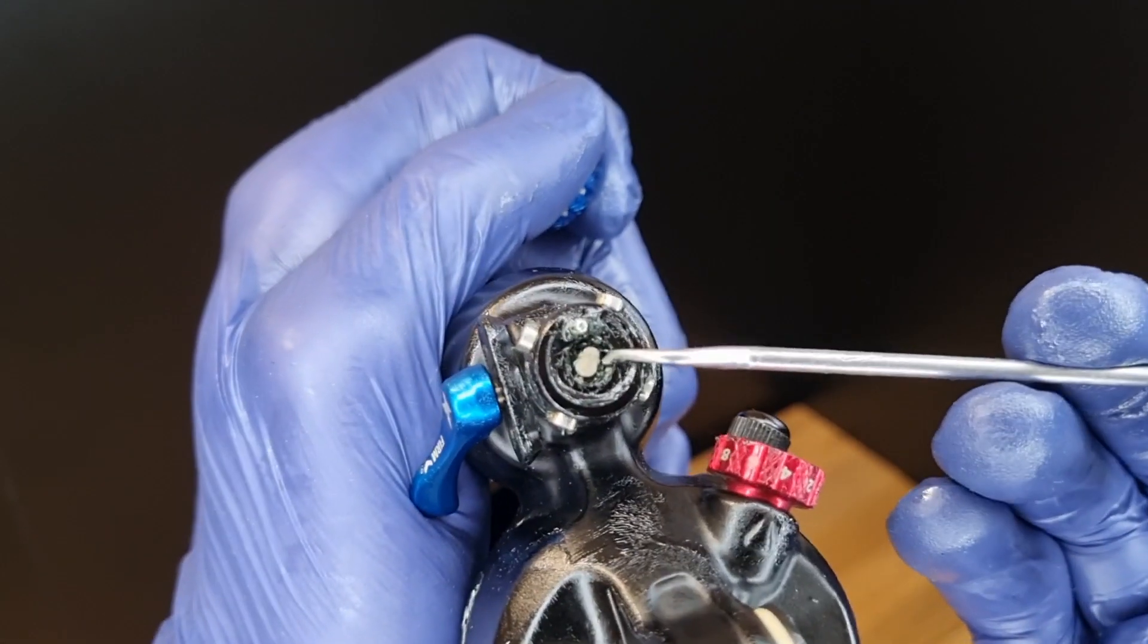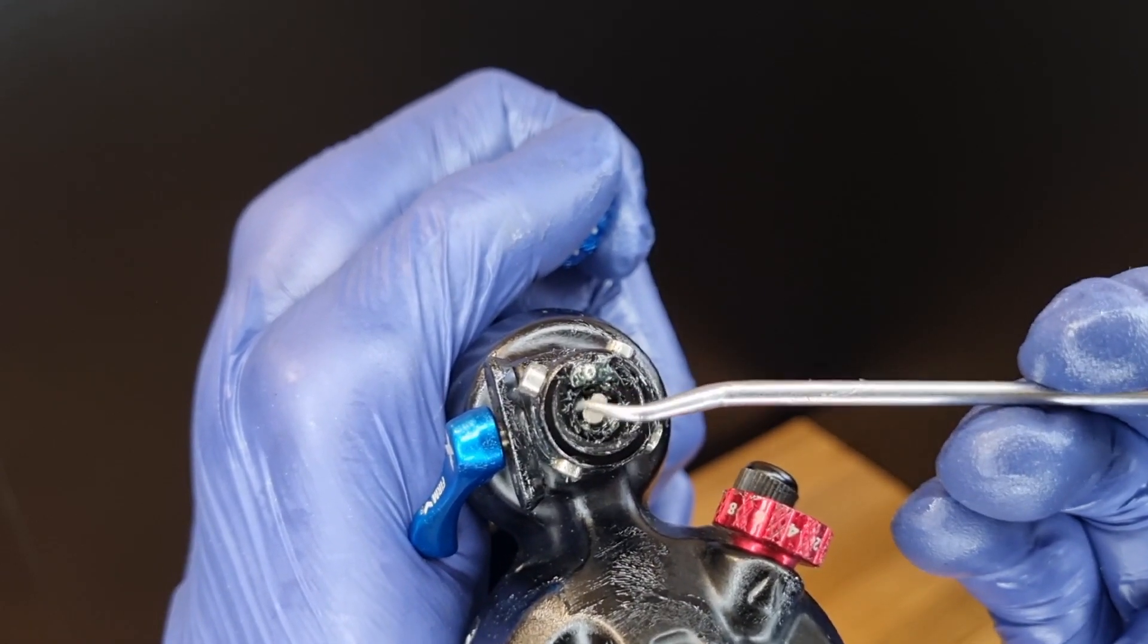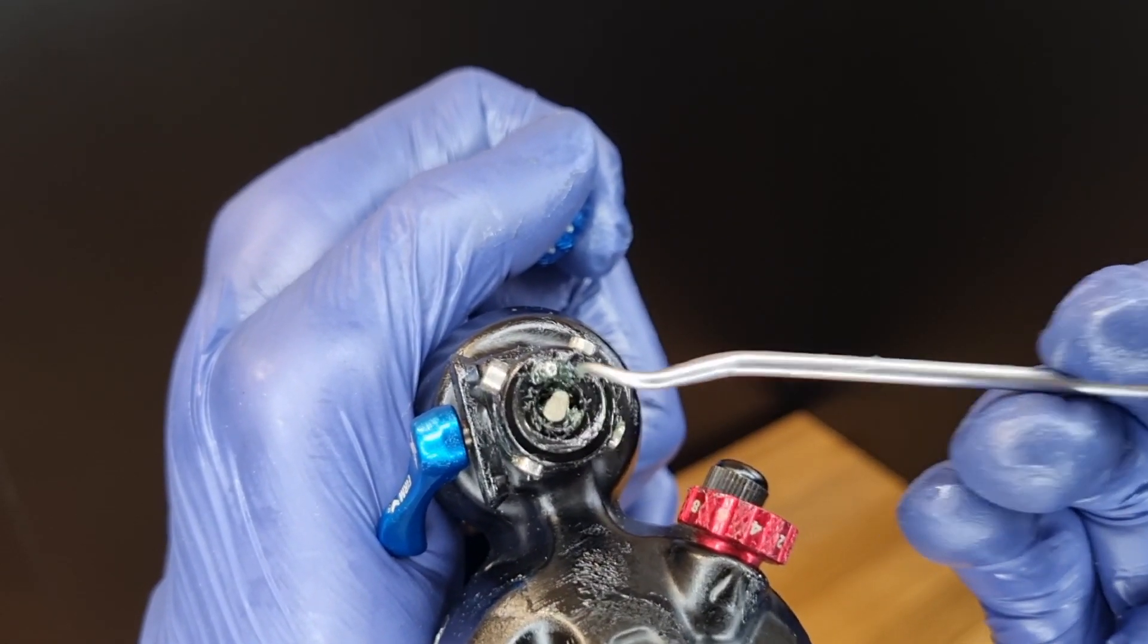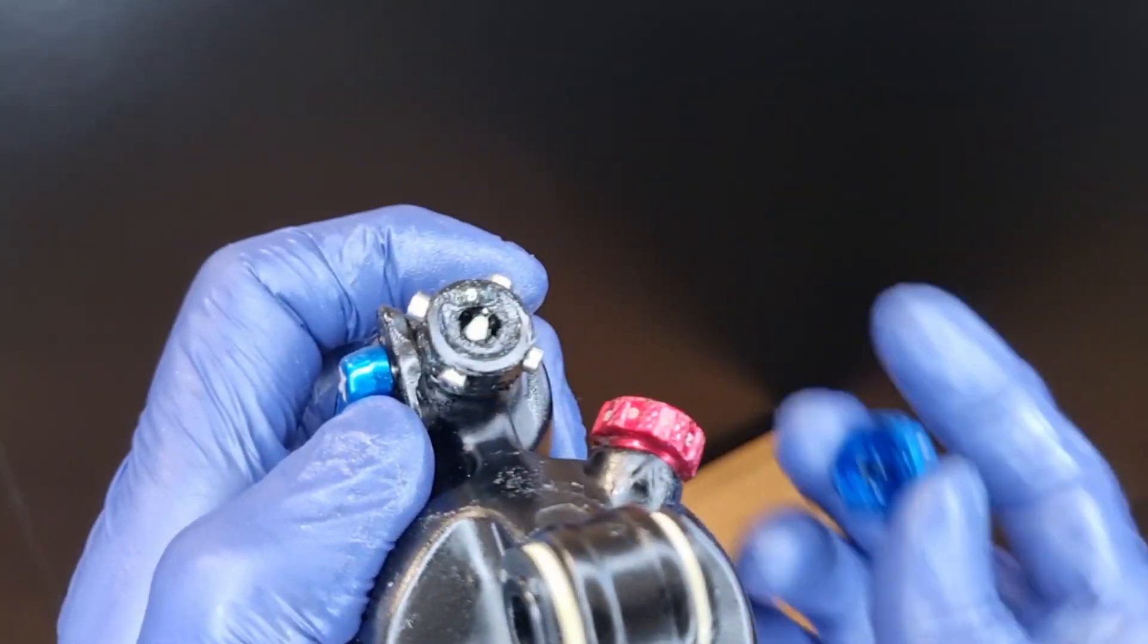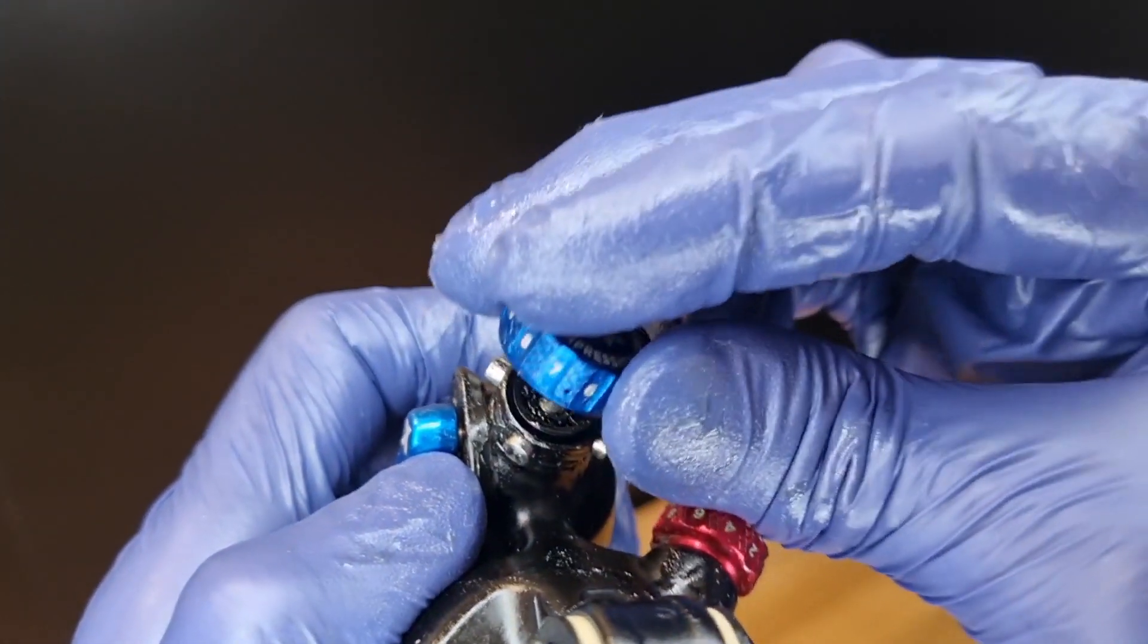You may need to push back on the detent balls a bit to make space for the adjuster to fit in there. It's keyed so check it's oriented properly.